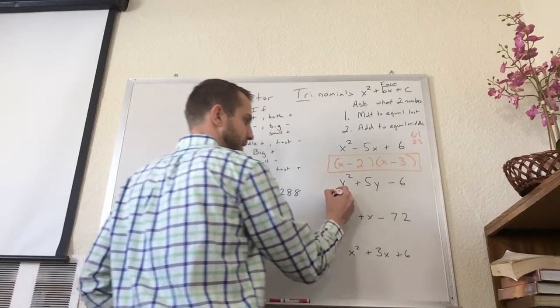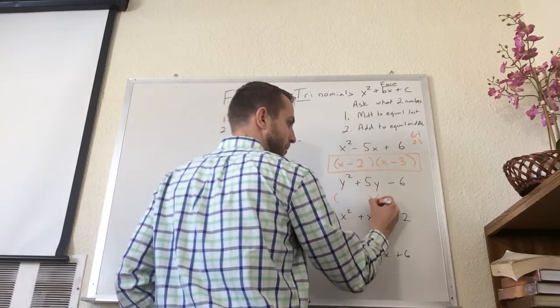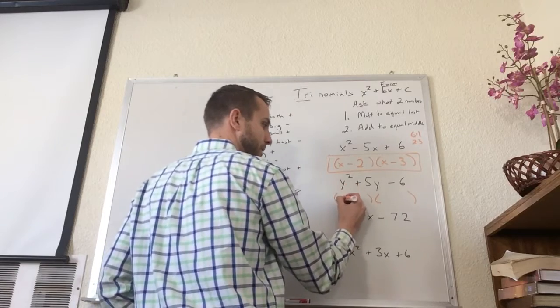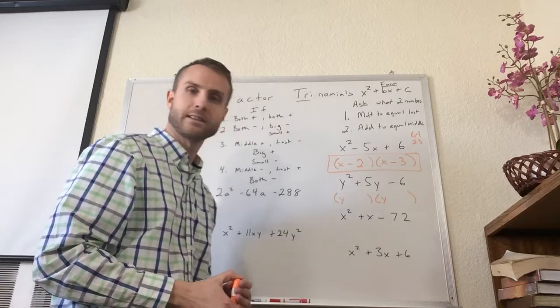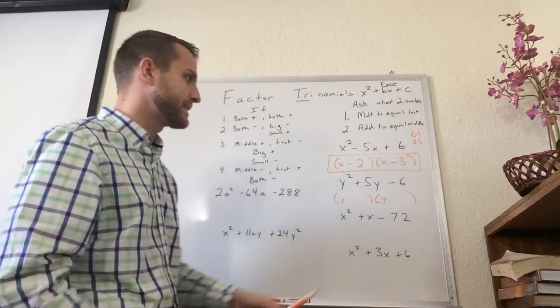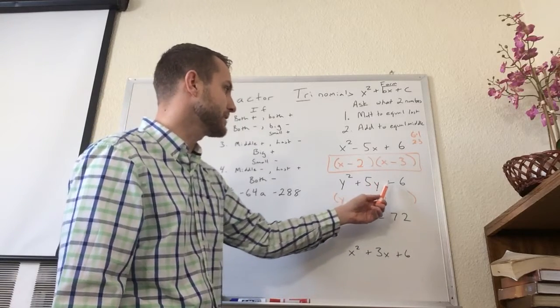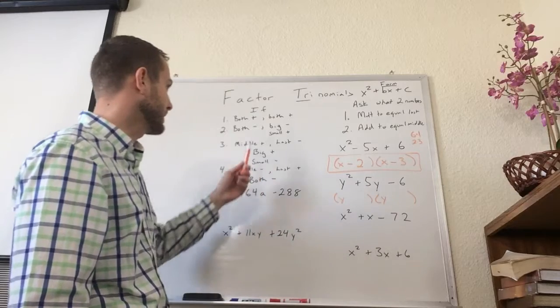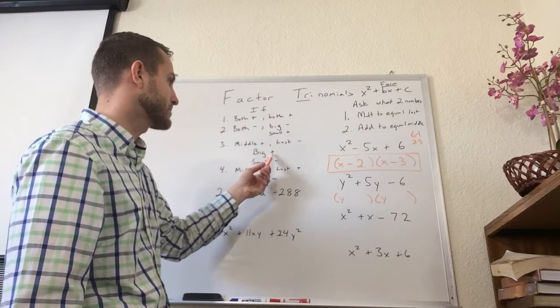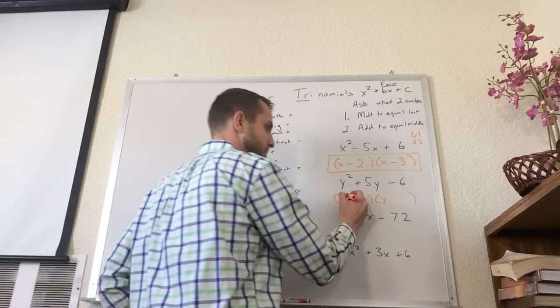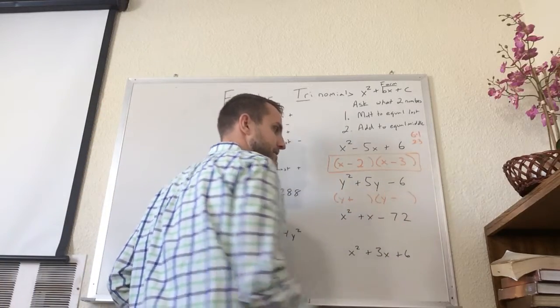Let's try this next one. Again, first step, always parentheses. Take my letter that's being squared, put that once in each parenthesis. Now I'm going to look at my signs. My middle is positive. My last is negative. That means the bigger factor will be positive and the smaller factor will be negative. So I'm going to go ahead and do one positive and one negative.